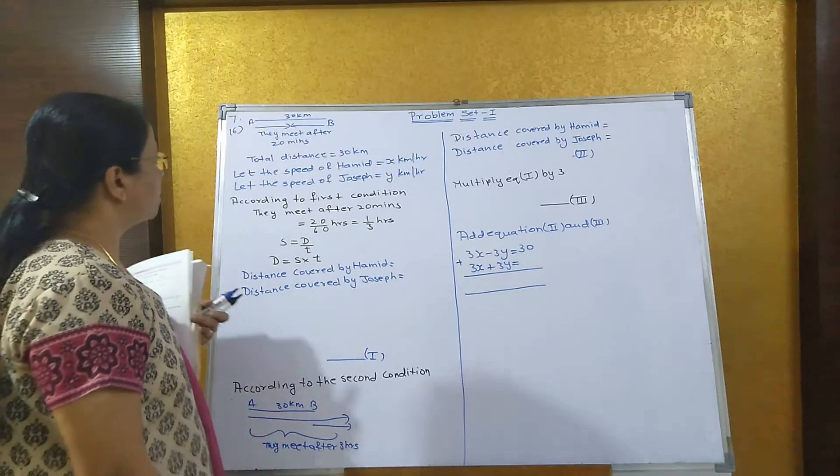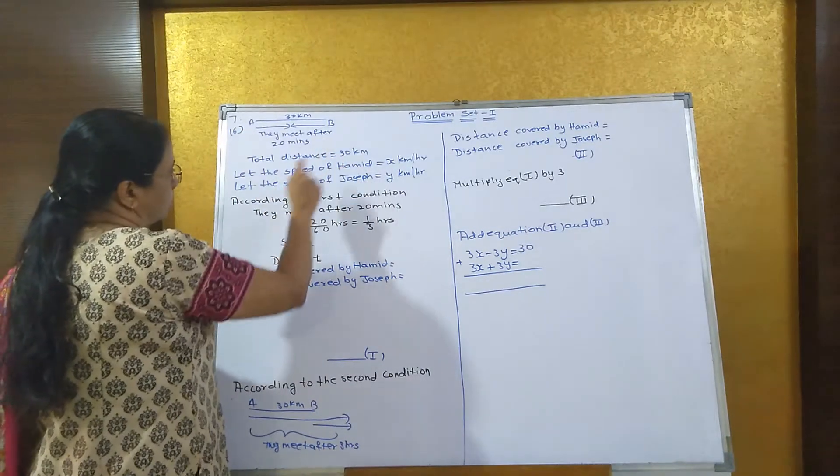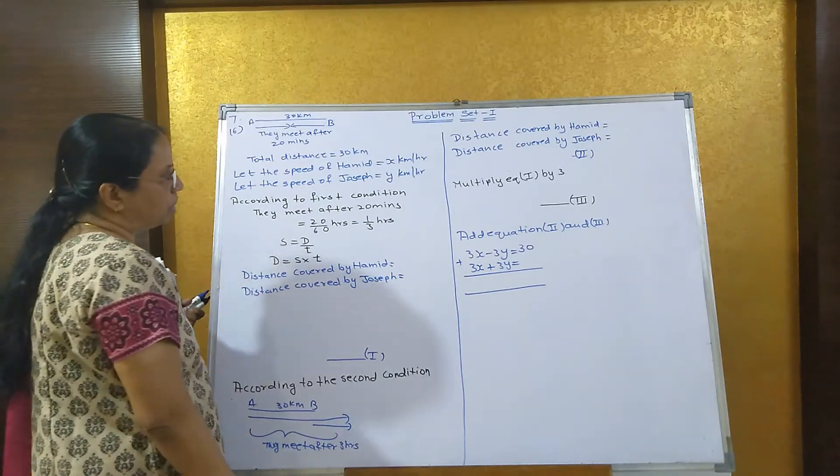Now see the last sum, number 7. The total distance between A and B is 30 km. We have to find out the speed of Hamid and Joseph.